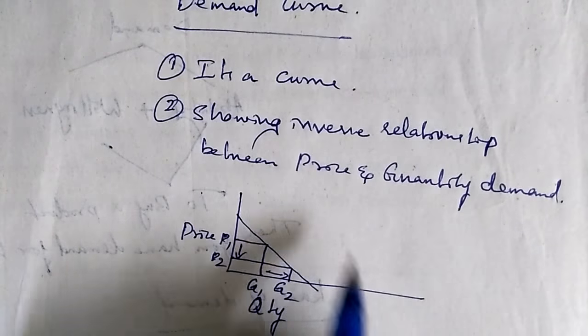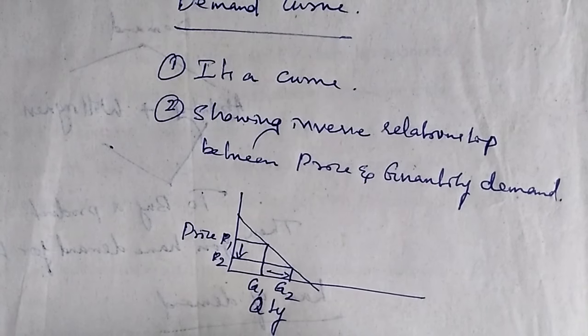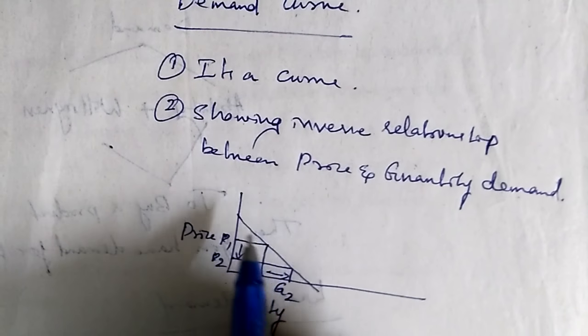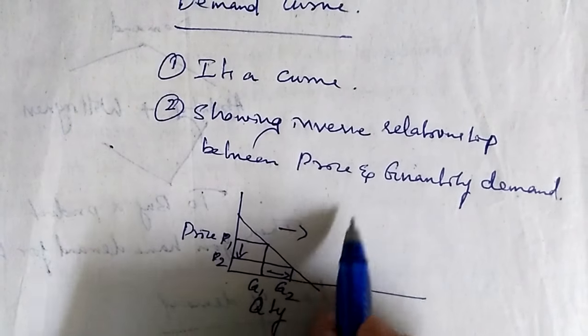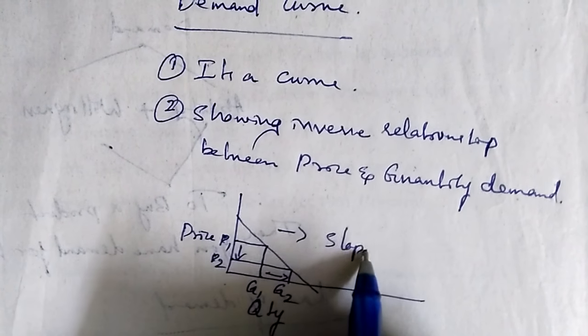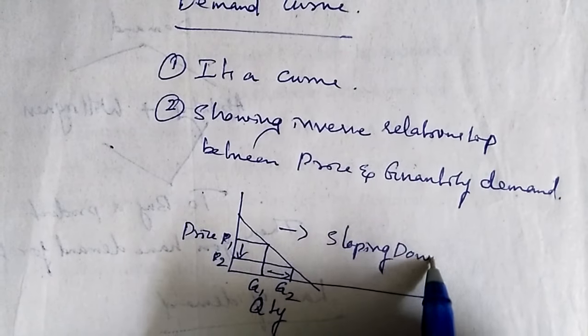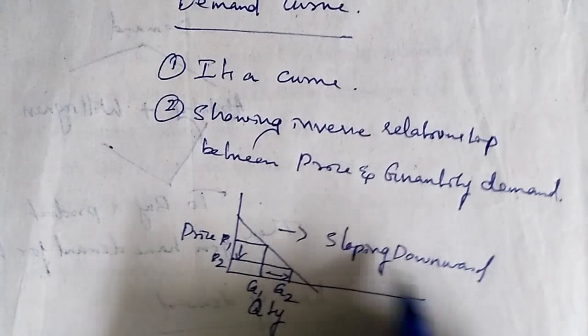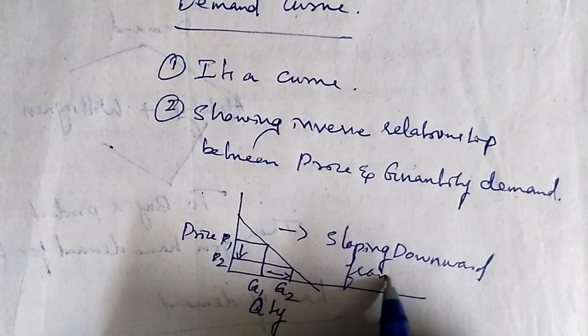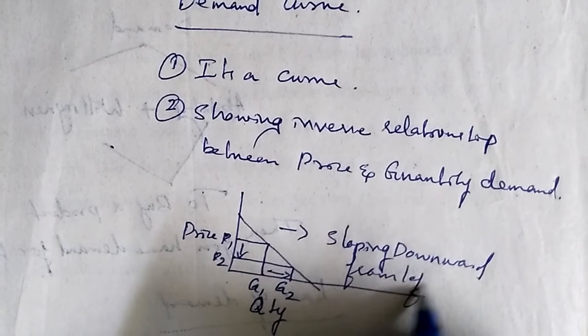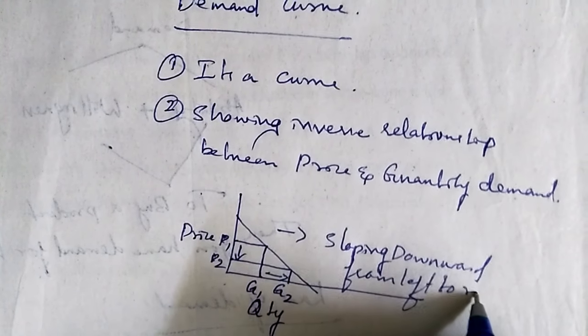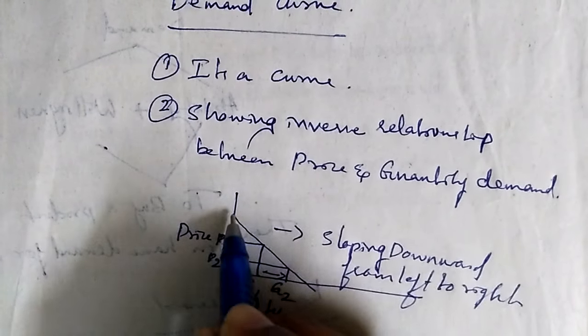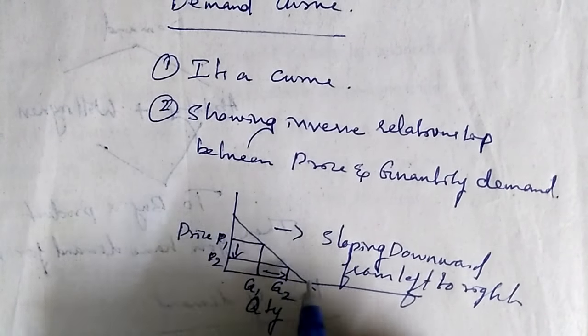That is what we call the demand curve. It is sloping downward from left to right.